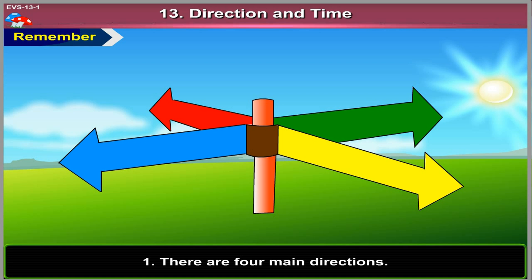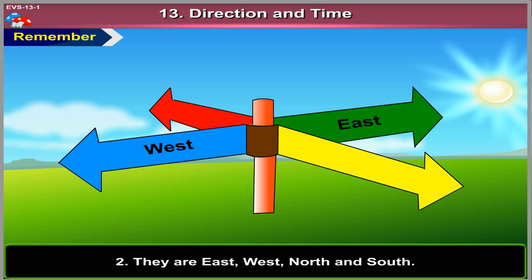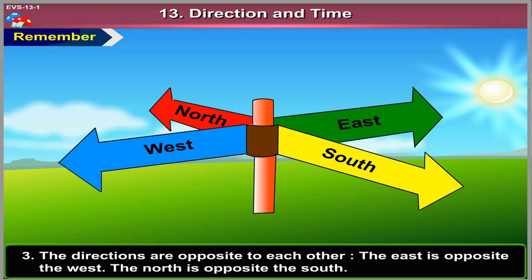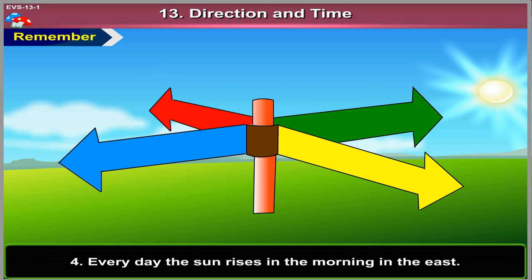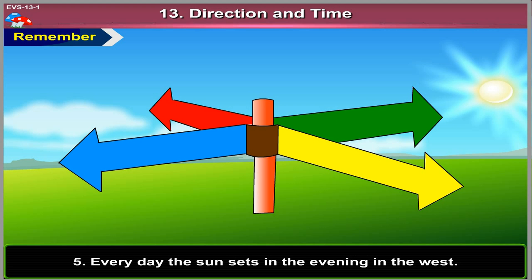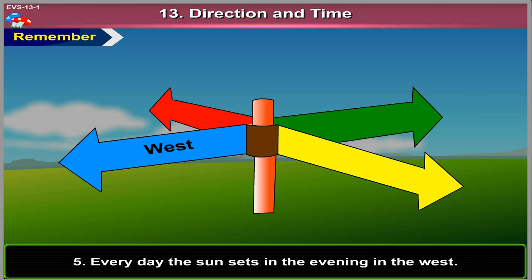Remember: There are four main directions. They are east, west, north and south. The directions are opposite to each other — the east is opposite the west. Every day the sun rises in the morning in the east. Every day the sun sets in the evening in the west.